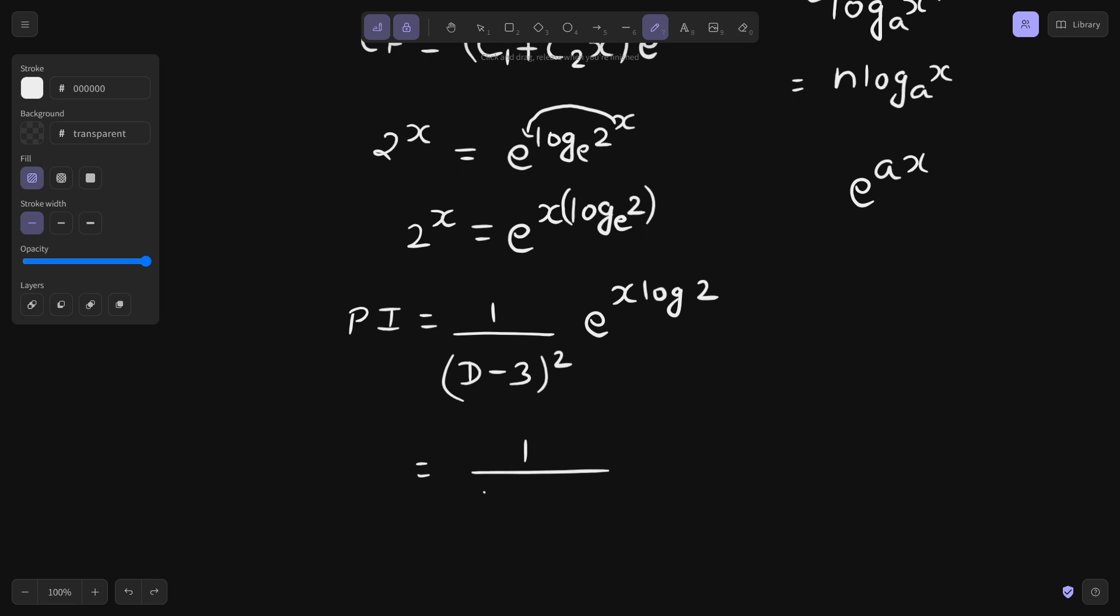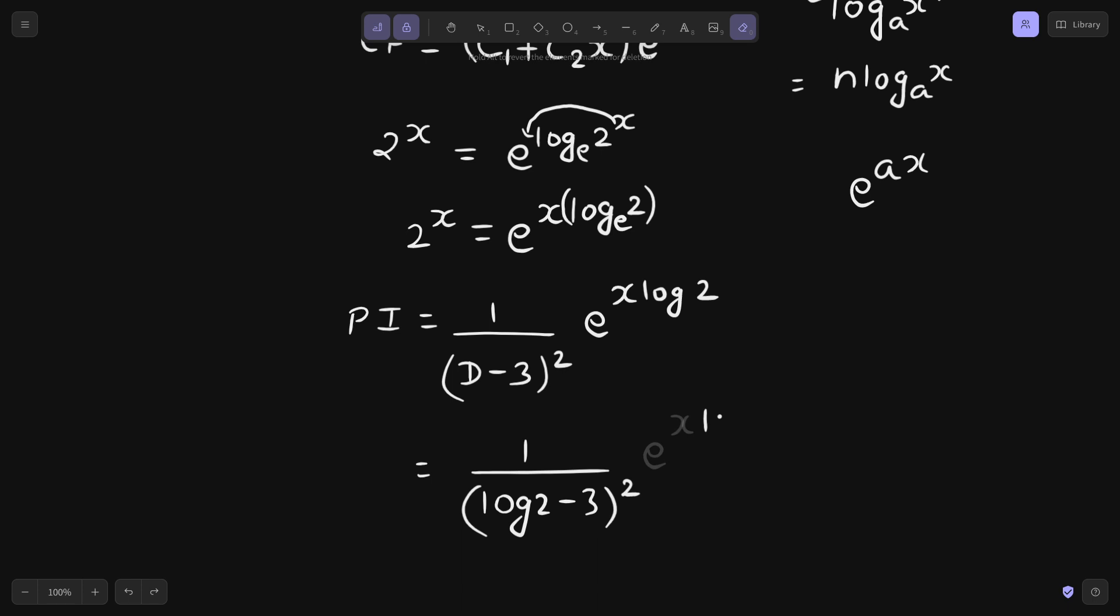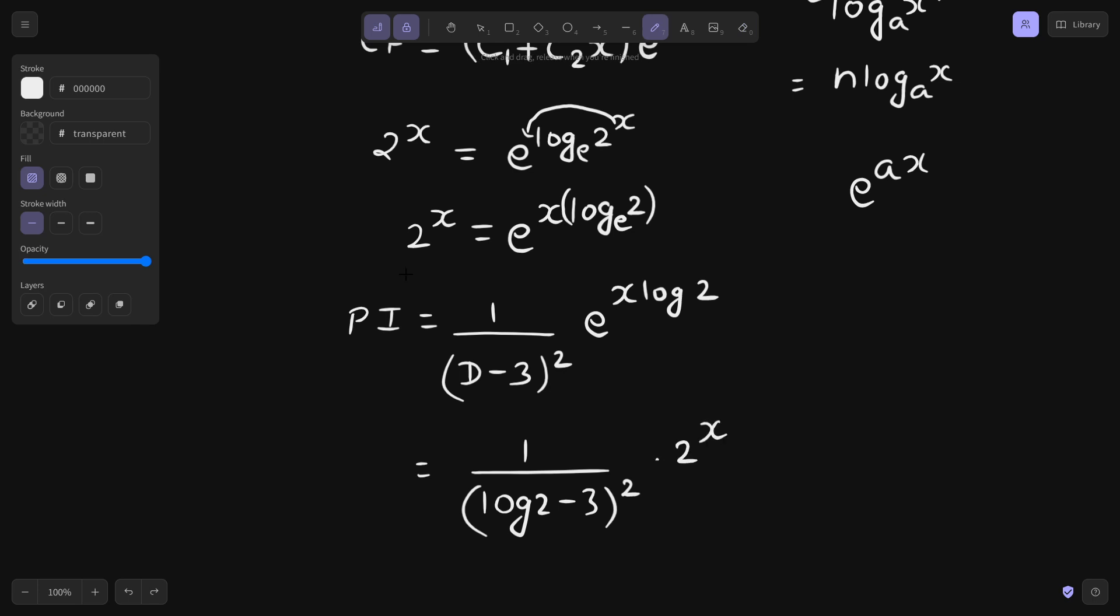If I do so, I can write this as log 2 minus 3 whole square, and this will be nothing but e power x log 2. I can write 2 power x because this is the simplified or the complex version of 2 power x only. I can write 2 power x here, no problem.